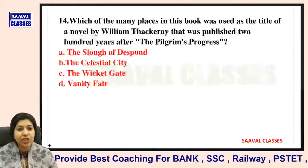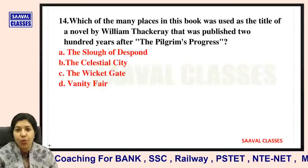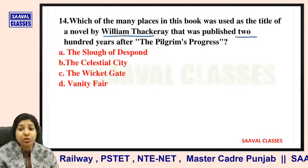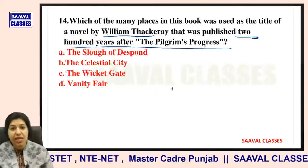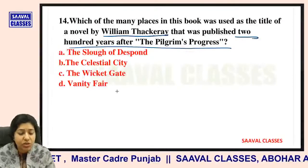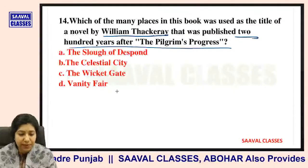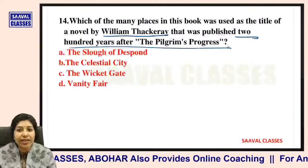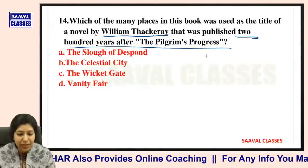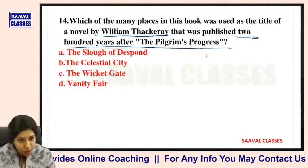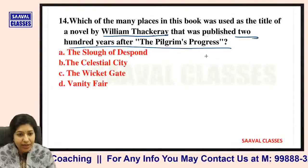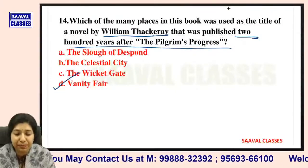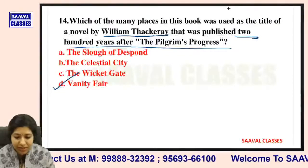Question number fourteen: Which of the many places in The Pilgrim's Progress was used as the title of a novel by William Thackeray, published 200 years after The Pilgrim's Progress? The Slough of this Pond, The Celestial City, The Wicket Gate, or Vanity Fair? The right answer is Vanity Fair.